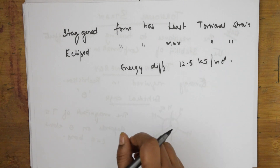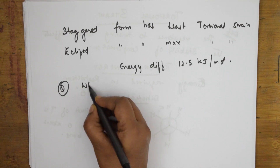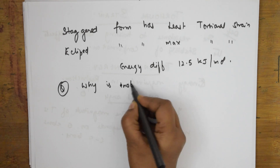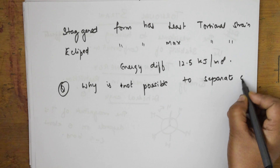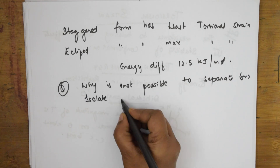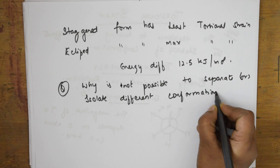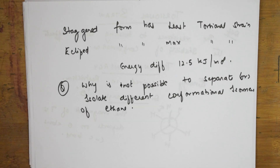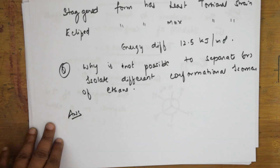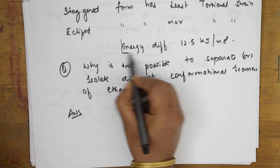Now let us answer one question: why is it not possible to separate or isolate the conformational isomers of ethane? The simple answer requires mentioning key points. The energy difference between the conformers is very small — just 12.5 kilojoules per mole.